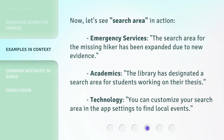Now let's see 'search area' in action. Emergency services: the search area for the missing hiker has been expanded due to new evidence. Academics: the library has designated a search area for students working on their thesis. Technology: you can customize your search area in the app settings to find local events.